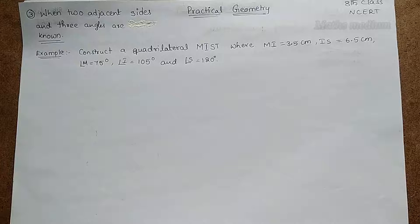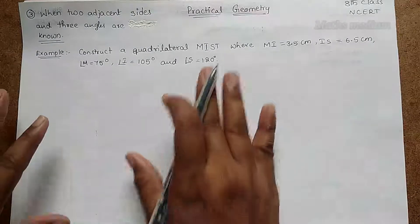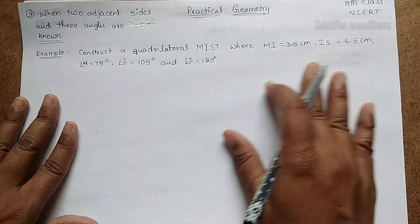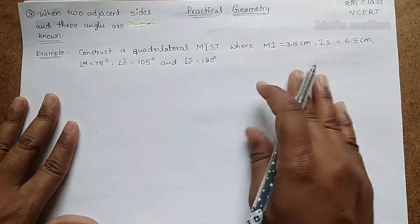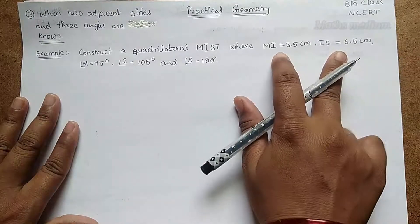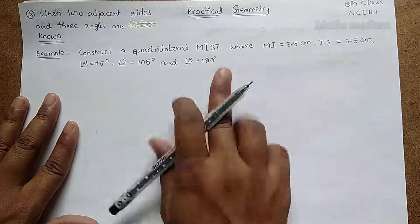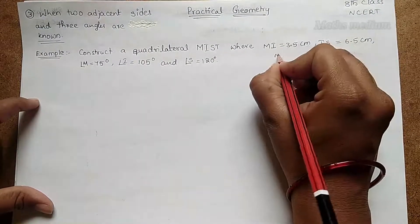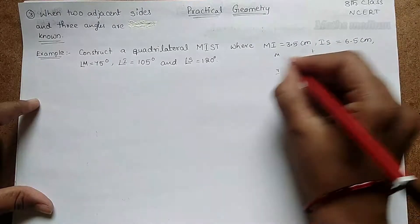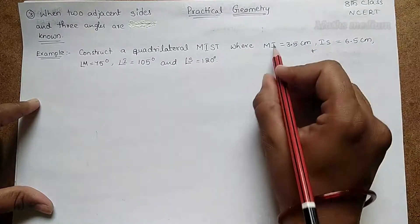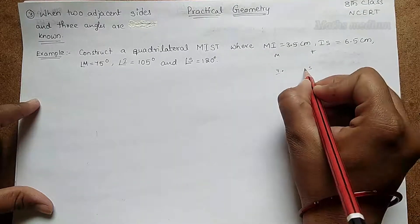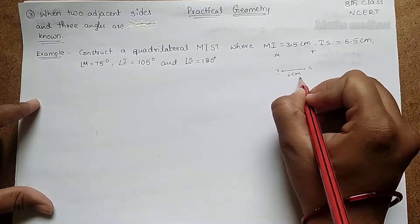Before going into the actual construction of quadrilateral MIST, we have to make a rough sketch. This will give us a better picture of the quadrilateral. So let's move into the rough sketch of quadrilateral MIST. MI and IS are the two adjacent sides. Let the base IS be 6.5 centimeters.